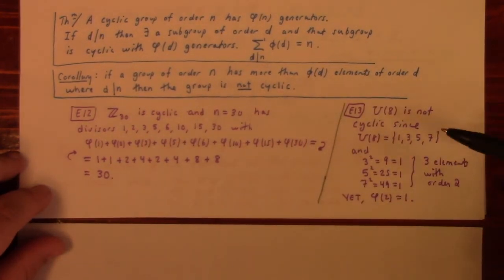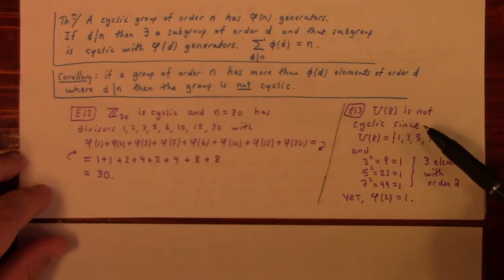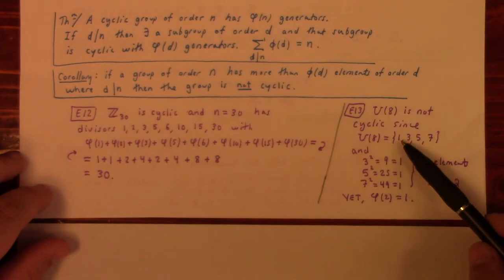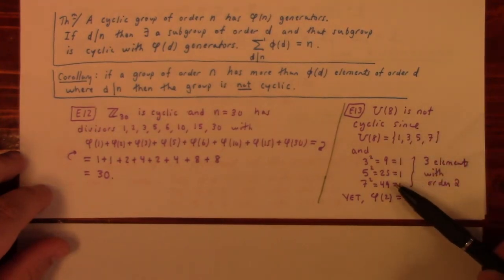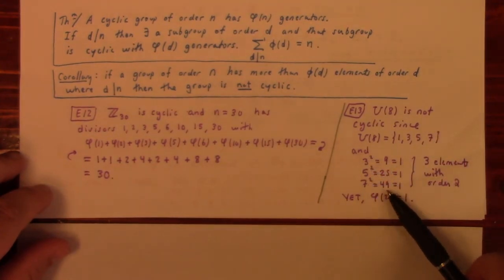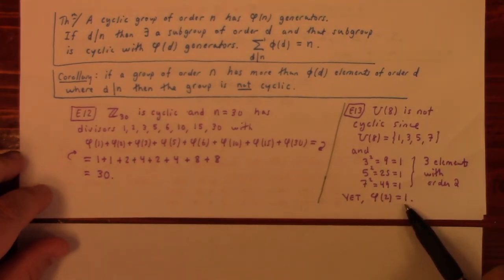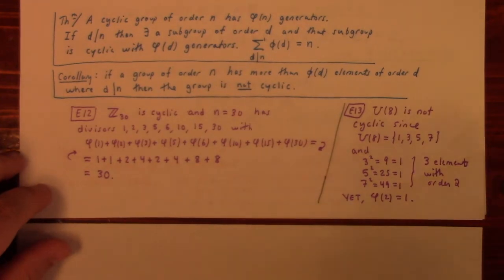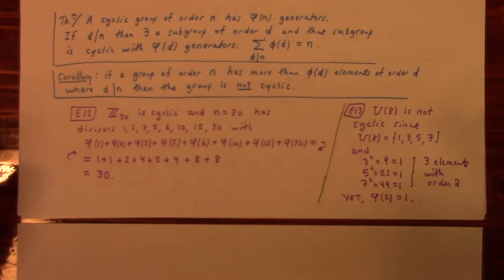Example 13: U_8 = {1, 3, 5, 7} is not cyclic. Looking at the elements, 3² = 9 ≡ 1, 5² = 25 ≡ 1, and 7² = 49 ≡ 1 mod 8. So 3, 5, and 7 all have order 2 — that's three elements of order 2. But φ(2) = 1, meaning a cyclic group can have at most one element of order 2. Having more than one element of order 2 means the group is not cyclic.